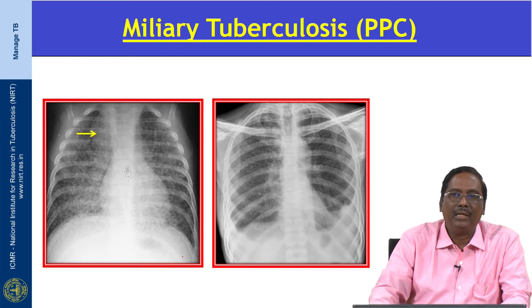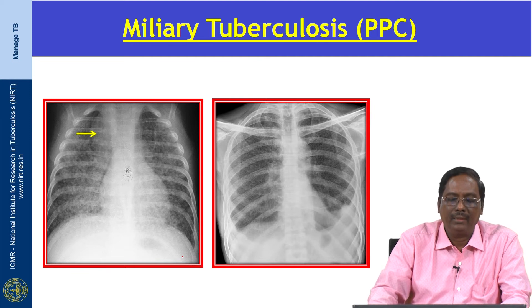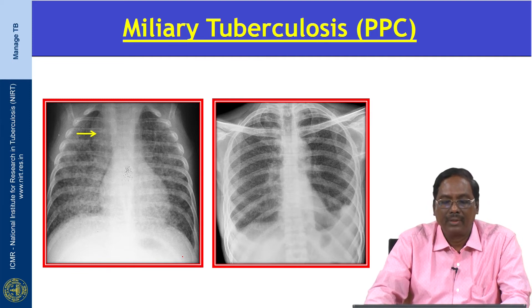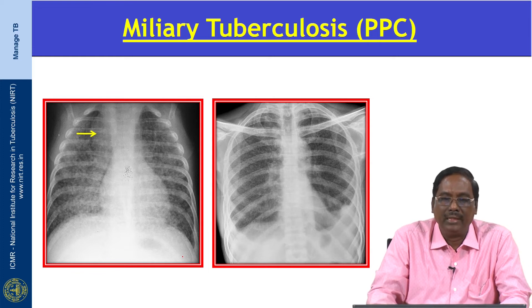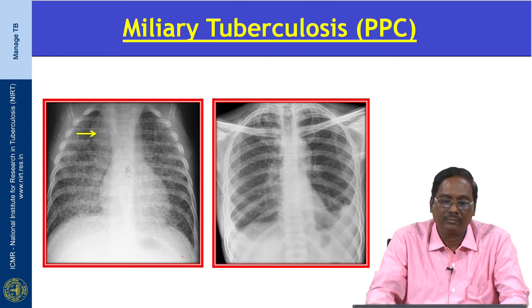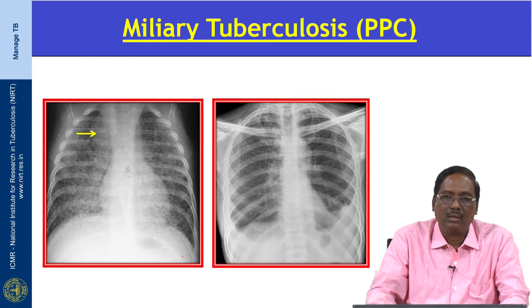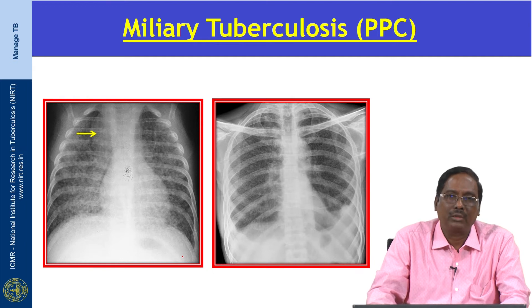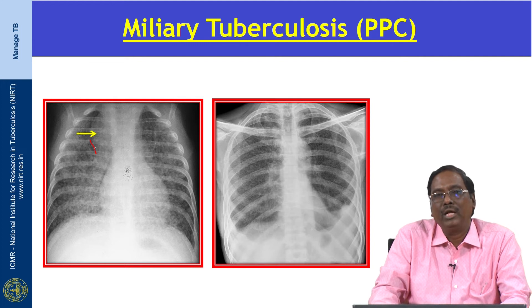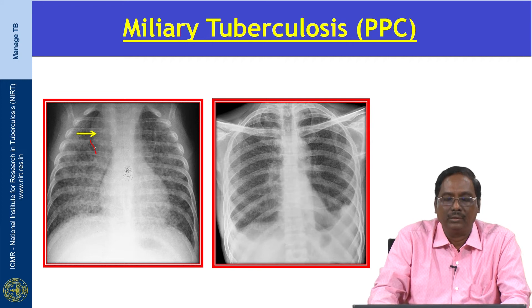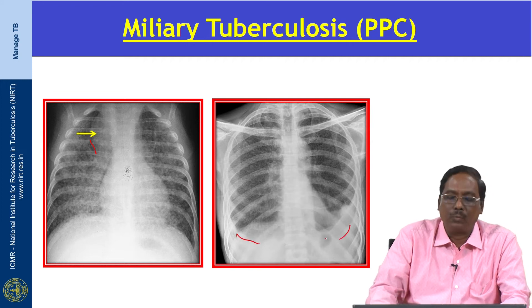Miliary TB is more common in primary disease and is seen in 2.6 percent of primary TB cases. It results from hematogenous dissemination of TB bacilli, leading to development of innumerable small granules in the lungs or other organs. Radiologically, miliary TB appears as small, similar, discrete nodules, mostly involving the base and sparing the apex. An important point: miliary tuberculosis in primary TB may be associated with lymph node enlargement, as seen in this patient with miliary TB and pulmonary involvement.